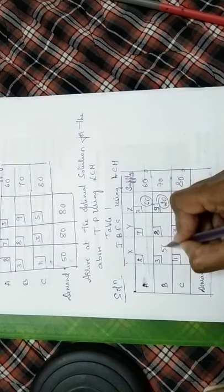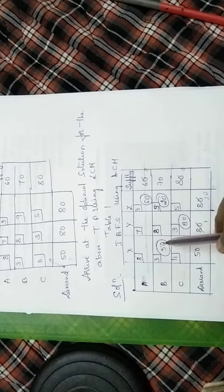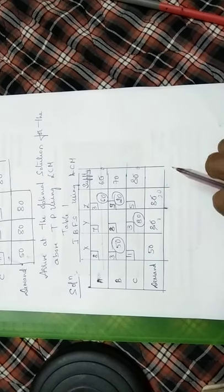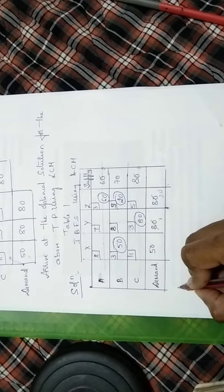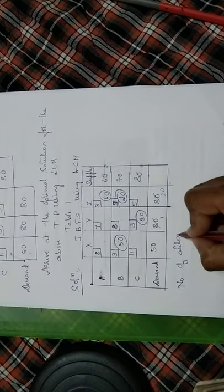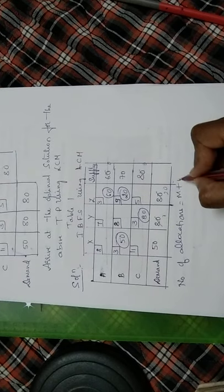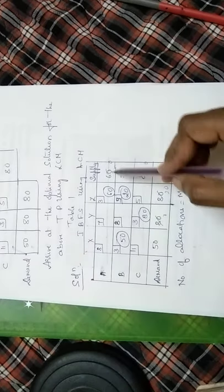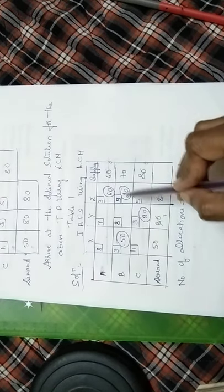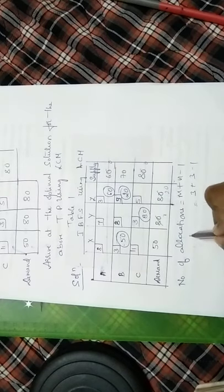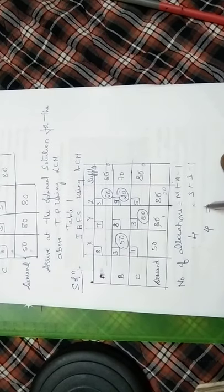Now to test the optimality, first thing we need to do is calculate the number of allocations. Number of allocations should be equal to m plus n minus 1. There are 3 rows and 3 columns, so 3 plus 3 minus 1. Number of allocations are 1, 2, 3, and 4. So 4 is not equal to 5.